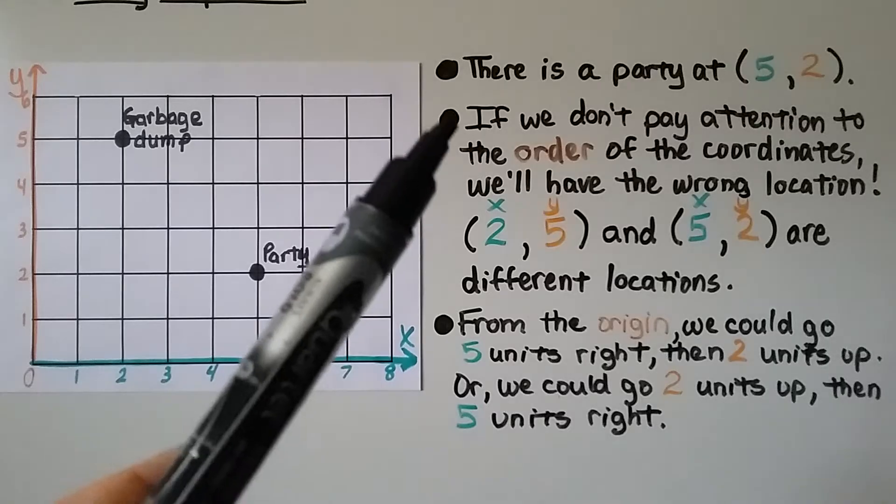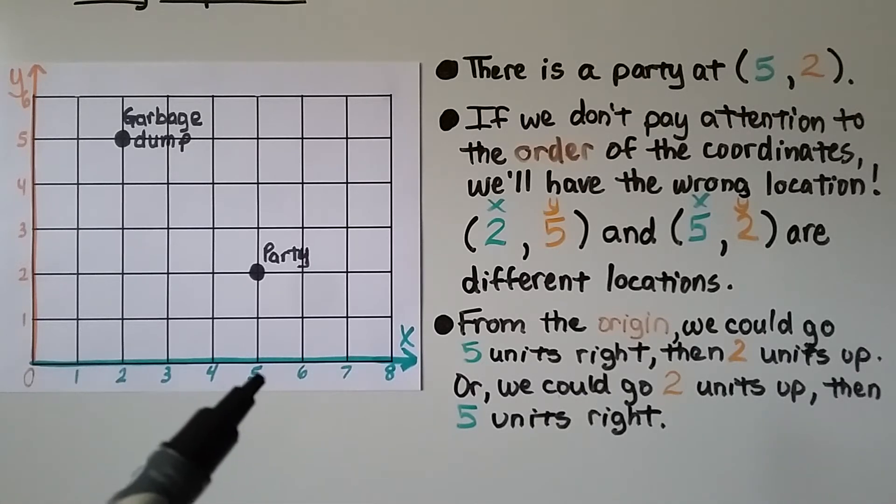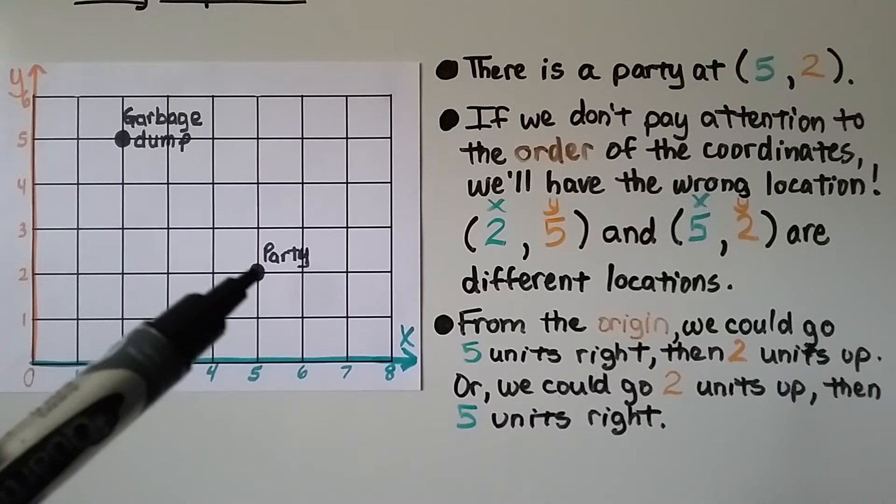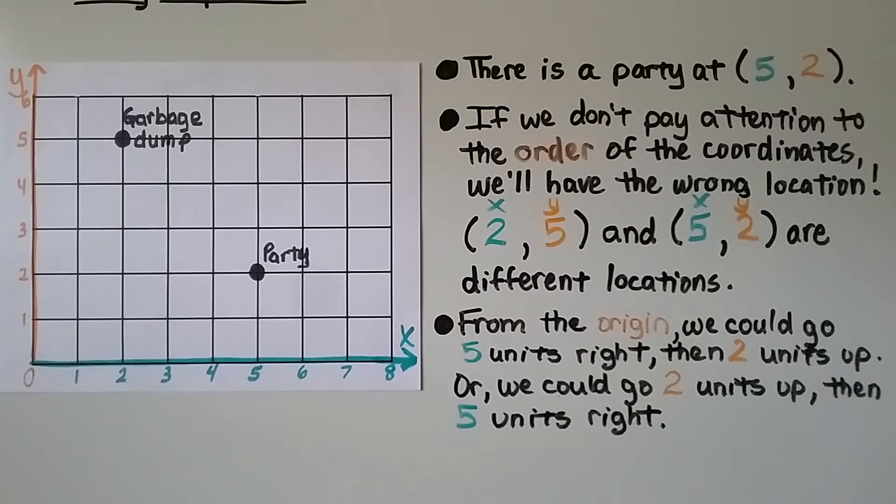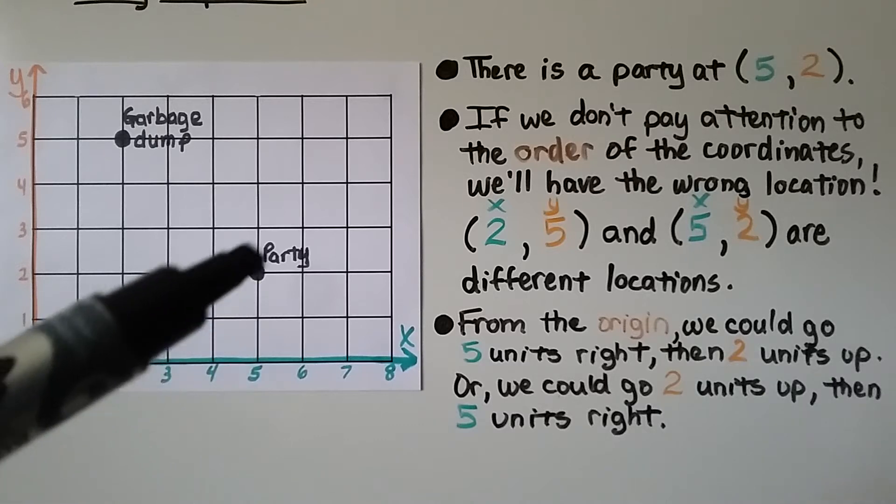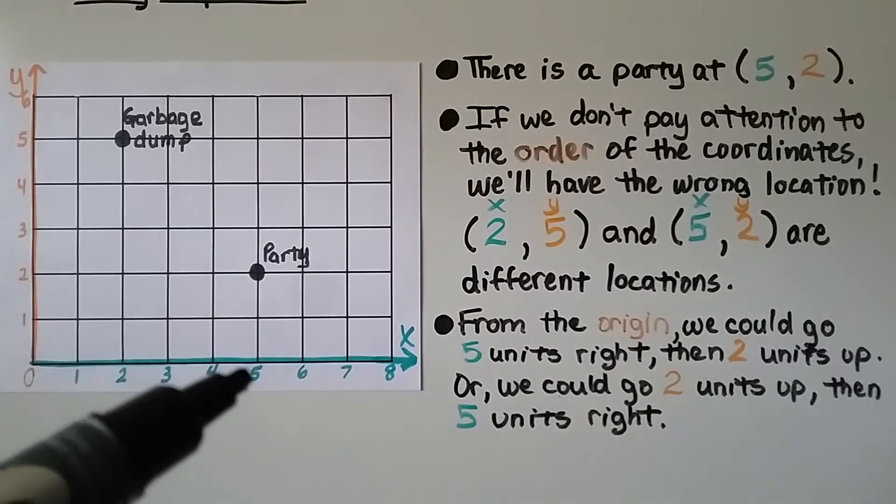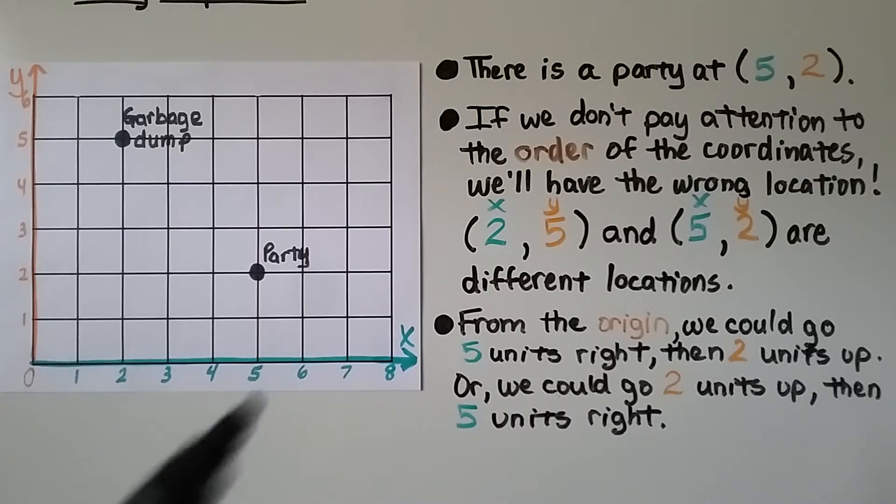If this were a map, and there's a party at 5 for x and 2 for y, the party would be right here. If we don't pay attention to the order of the coordinates, we'll have the wrong location. If we choose y and do 5, and then do 2, on this map, we'd end up at a garbage dump instead of the party. And from the origin for the party, we could go 5 units to the right, then 2 units up. But to make your life easier, you should always start with the x-coordinate first.